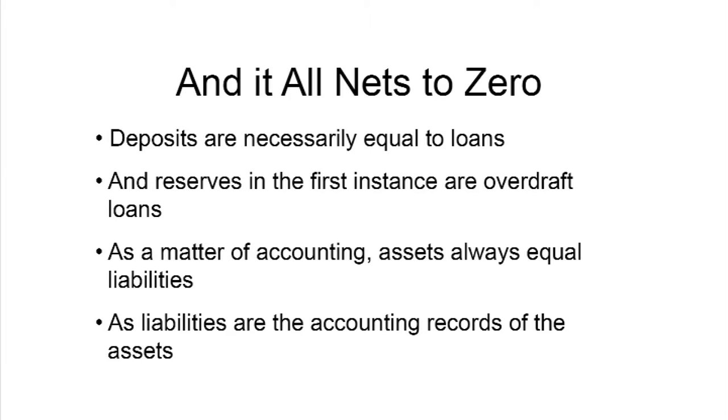It all nets to zero. Deposits are necessarily equal to loans. If you've got $100 in a deposit, it's because somebody else borrowed the $100 — or you wouldn't have it. There's nowhere else it can come from. As a matter of accounting, assets equal liabilities, loans equal deposits — they have to because they come from the same place. If they don't, somebody at the bank has to stay late and figure out why the numbers don't add up.